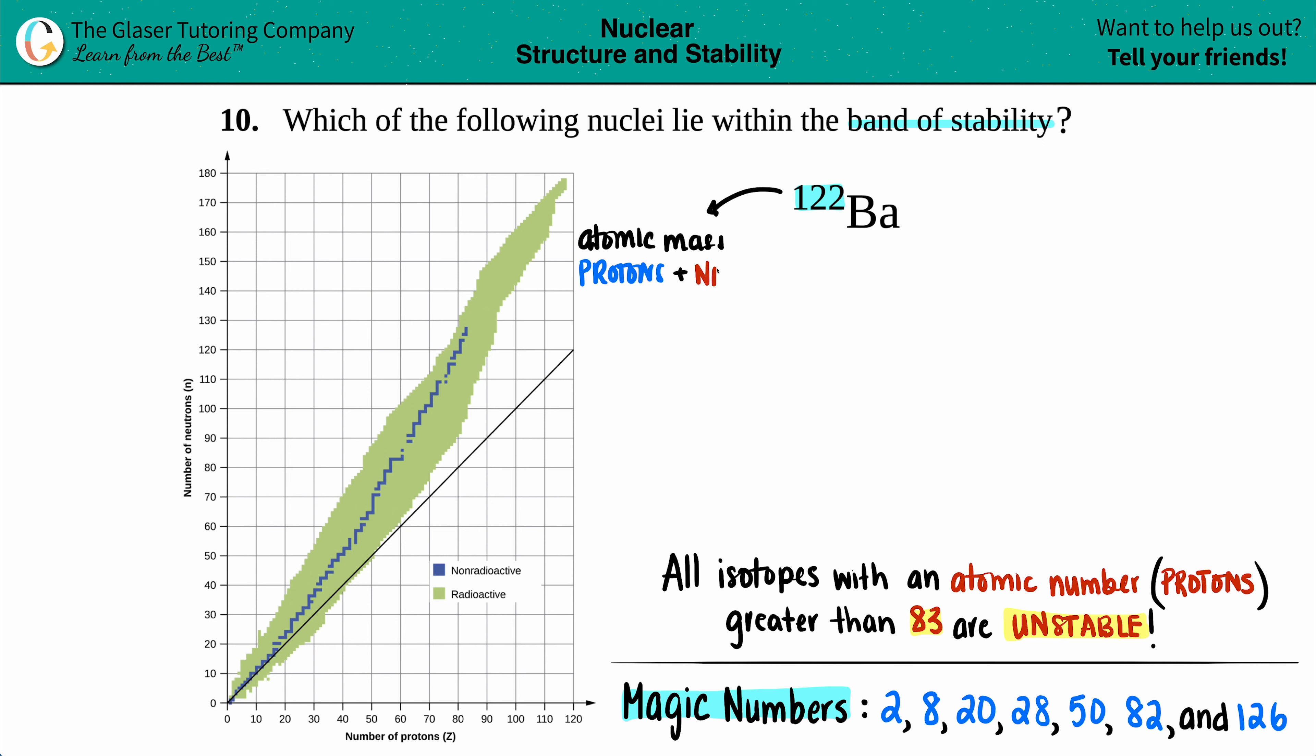So we have 122, and that represents the total number of protons and neutrons. But in order to find out if something is in the band of stability, we have to find out the breakdown of how many of the 122 is protons and how many is neutrons. So that means we need to find out that smaller number. And what's the smaller number in this notation? The smaller number is always going to be the atomic number. The atomic number is always going to be the number of protons.